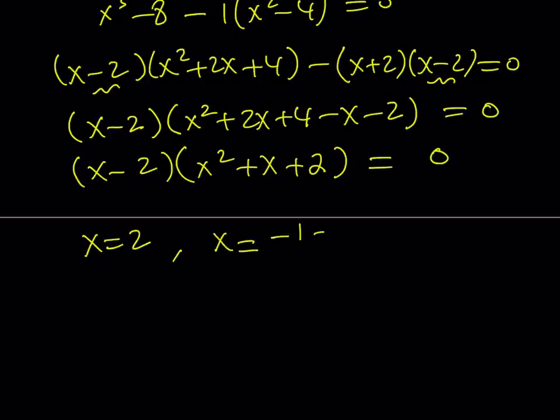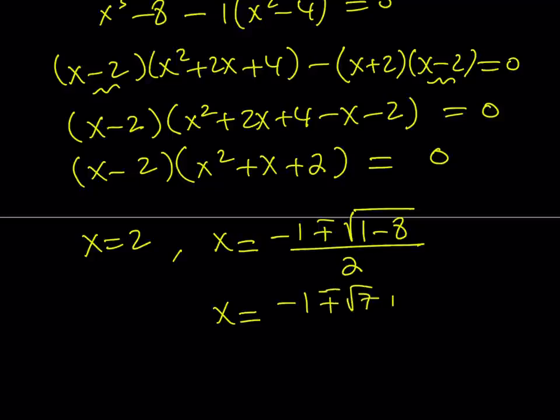That's going to give me -b ± √(b² - 4ac), which is 8, divided by 2. And from here x is going to become -1. So √(1 - 8) is √(-7). And that can be written as √7i with the ± sign in front of it. And these are going to be the solutions to my equation. So we have three solutions.